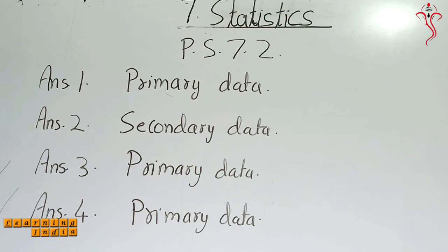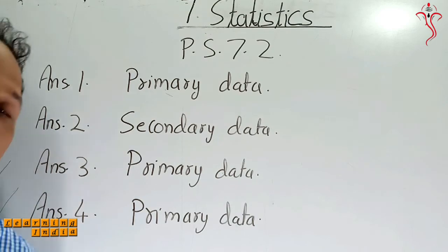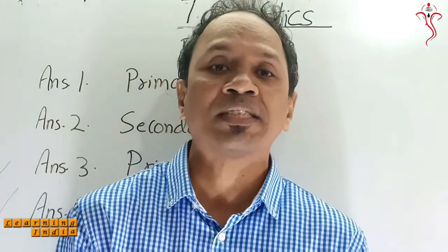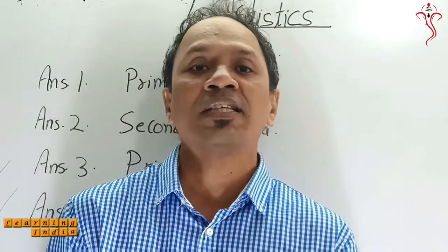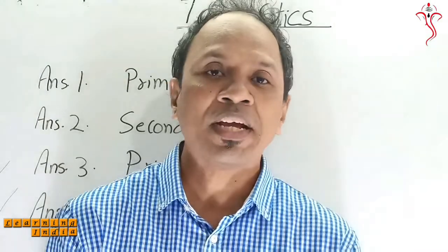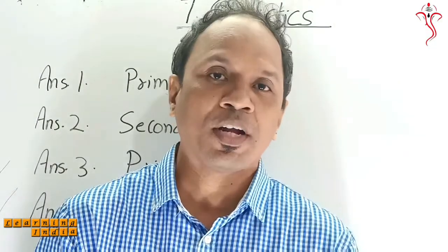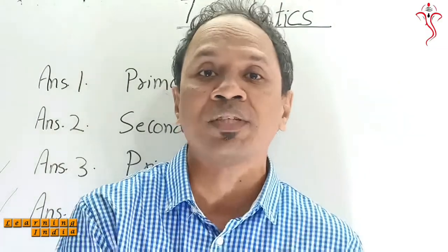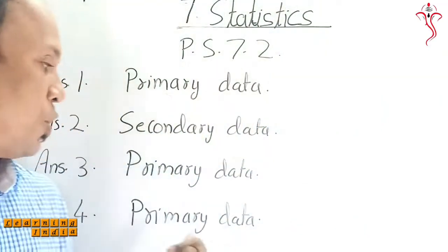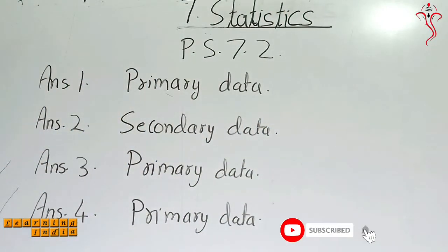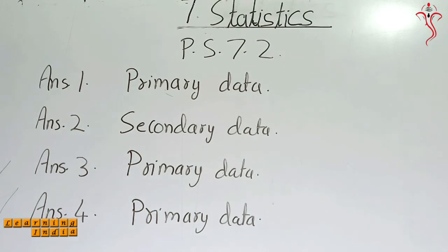For question four, the information about trees in a forest is gathered by visiting the forest. You are actually visiting the forest, seeing the number of trees, and recording them in your book. Since you are actually visiting the forest, that becomes your primary data. So Practice Set 7.2 is very easy.